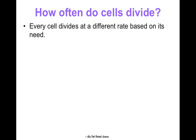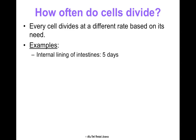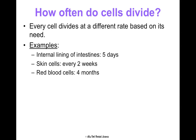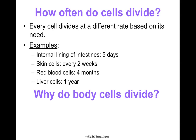Every cell divides at different rates based on what's needed. For example, the internal lining of your intestines divides every five days, skin cells divide every two weeks, red blood cells are every four months — which is why when you donate blood, you're supposed to only donate once every four months so it has time to regenerate. Your liver cells only divide about once a year, which is just crazy. The rate of division just depends on the type of cell.